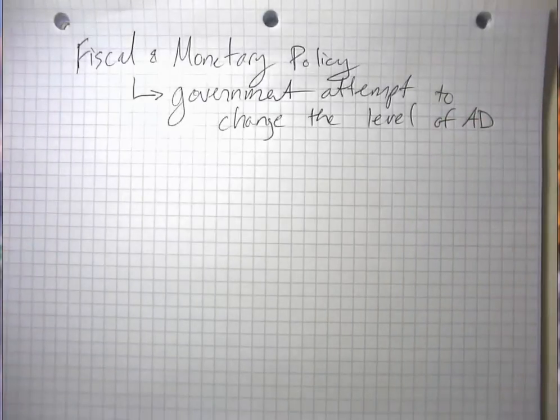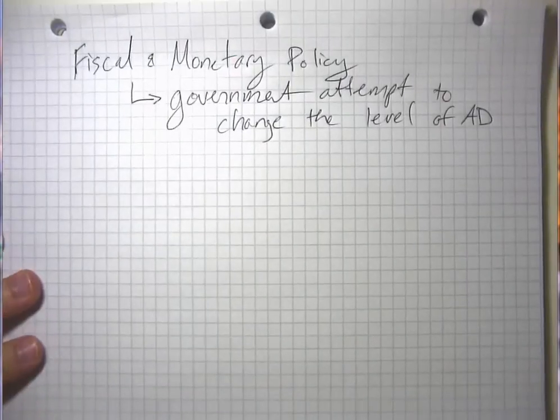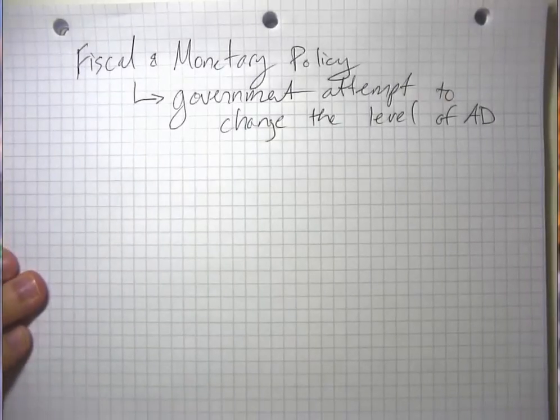Fiscal and monetary policies are things the government can do to attempt to change the level of aggregate demand. We might find ourselves in a situation where the economy is not recovering from a recession fast enough or where we're experiencing an unwanted increase in inflation due to a boom or something like that.